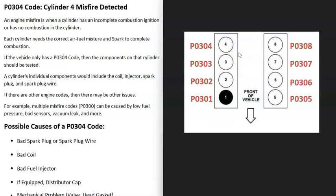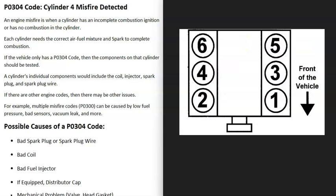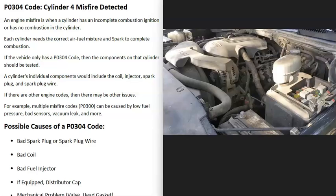A P0304 code is going to point to the number four cylinder on the engine. So if you look up your engine cylinder locations and find a diagram, cylinder number four is going to be the one causing the issue — that's the one to go take a look at. If you're only getting a misfire on one cylinder, you really only need to check the components on that cylinder, like the coil or the fuel injector on that cylinder.